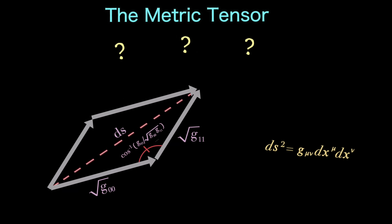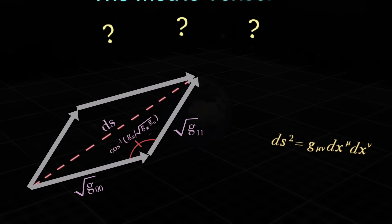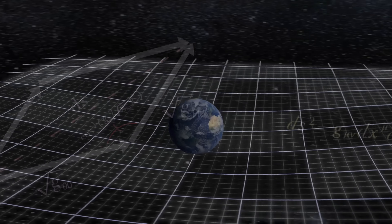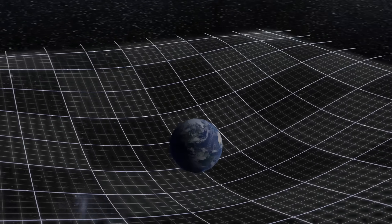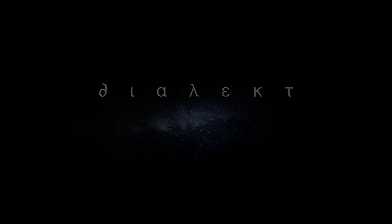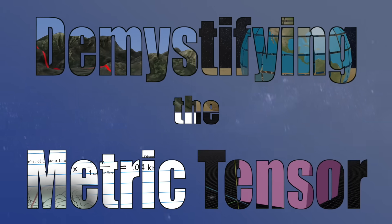But what is this idea exactly, and how has it come to play such a crucial role in the theory of general relativity? This is Dialect, and today we're demystifying the metric tensor.